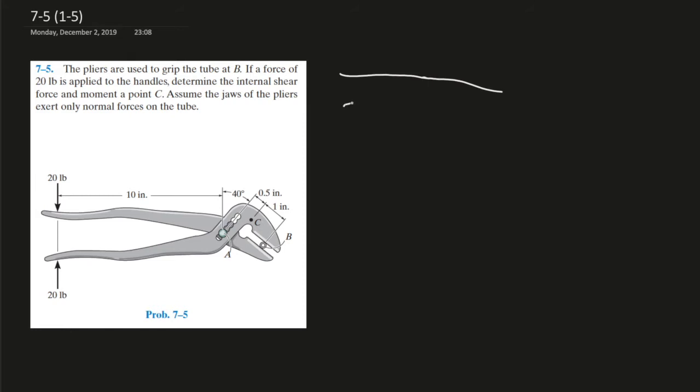One over here, one over here, and there are two forces, two forces, and two forces over here, another 20 pounds force. So for this type of problem, always we try not to find the global equilibrium, especially when there's cross sections over here. Just break it down and do the calculations from one part of the plier.